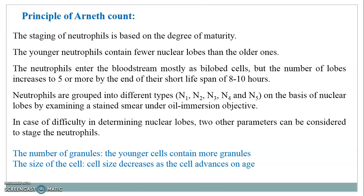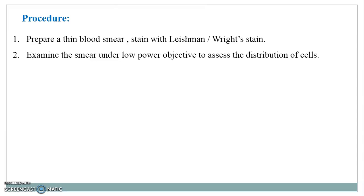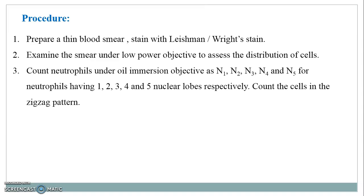These parameters can also be used for differentiating older and younger neutrophils. For the procedure, first prepare a thin blood smear, similar to that prepared for the differential white blood cell count (DLC). Then stain with Leishmann stain or rich stain. Examine the smear under low power objective to assess cell distribution, then count neutrophils under oil immersion objective as N1, N2, N3, N4, and N5.